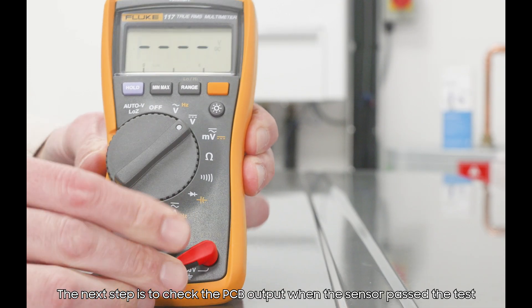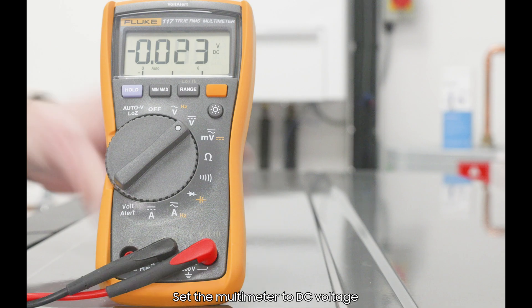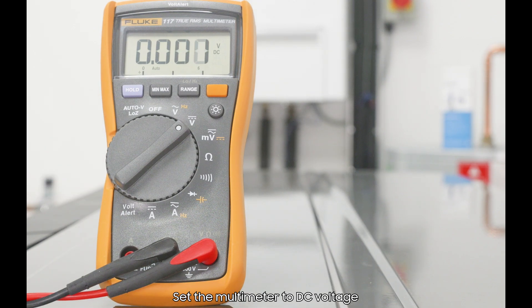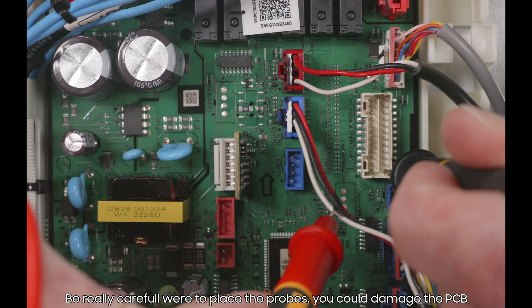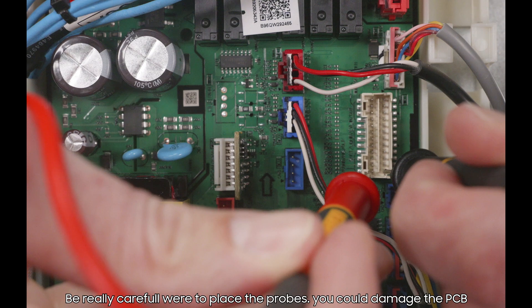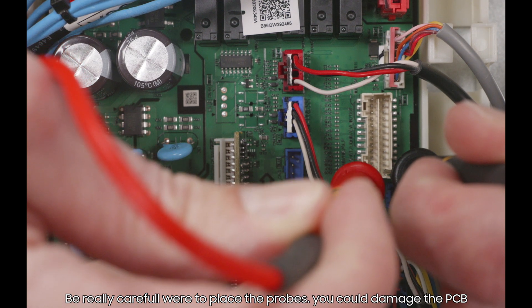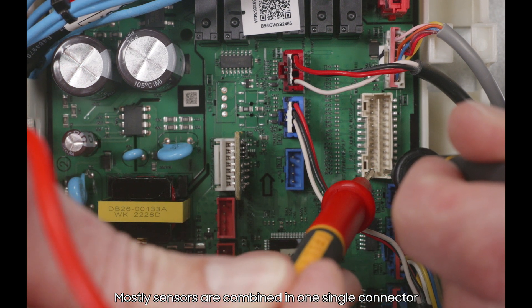The next step is to check the PCB output. When the sensor passed the test, set the multimeter to DC voltage. Be really careful where to place the probes. You can damage the PCB. Mostly, sensors are combined in one single connector.